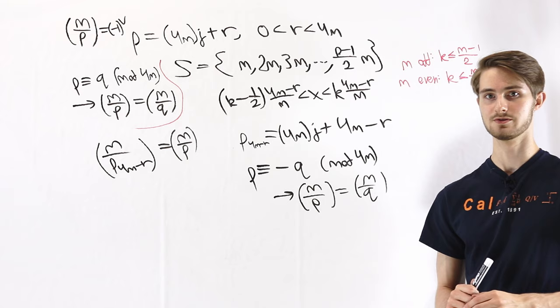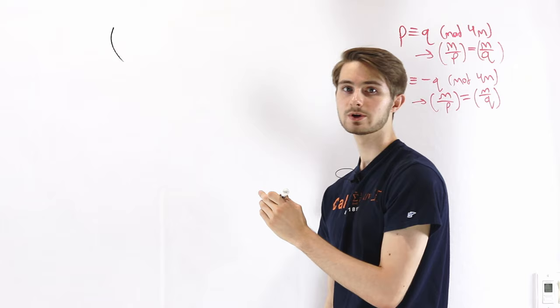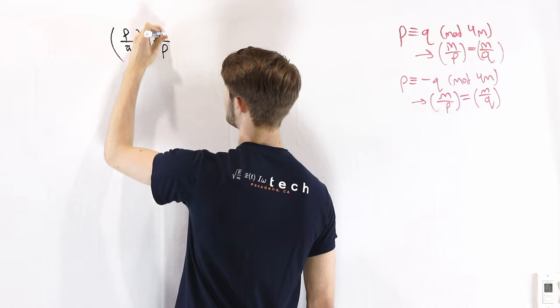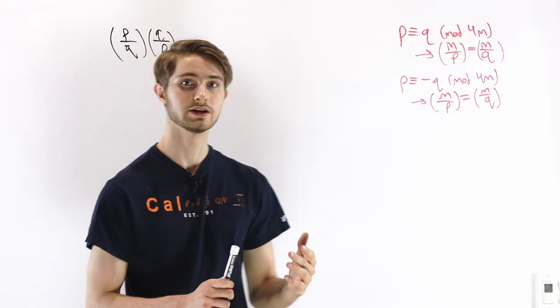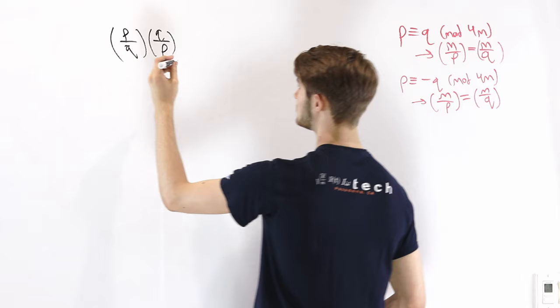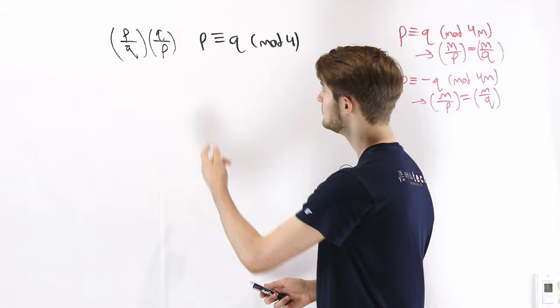We now have our two lemmas and can look at the law of quadratic reciprocity. We examine the product (p/q)·(q/p) where p and q are distinct odd prime numbers. We split into two cases based on whether p ≡ q mod 4. For the first case, suppose p ≡ q mod 4. Since they are distinct primes, one is bigger — assume p > q without loss of generality.